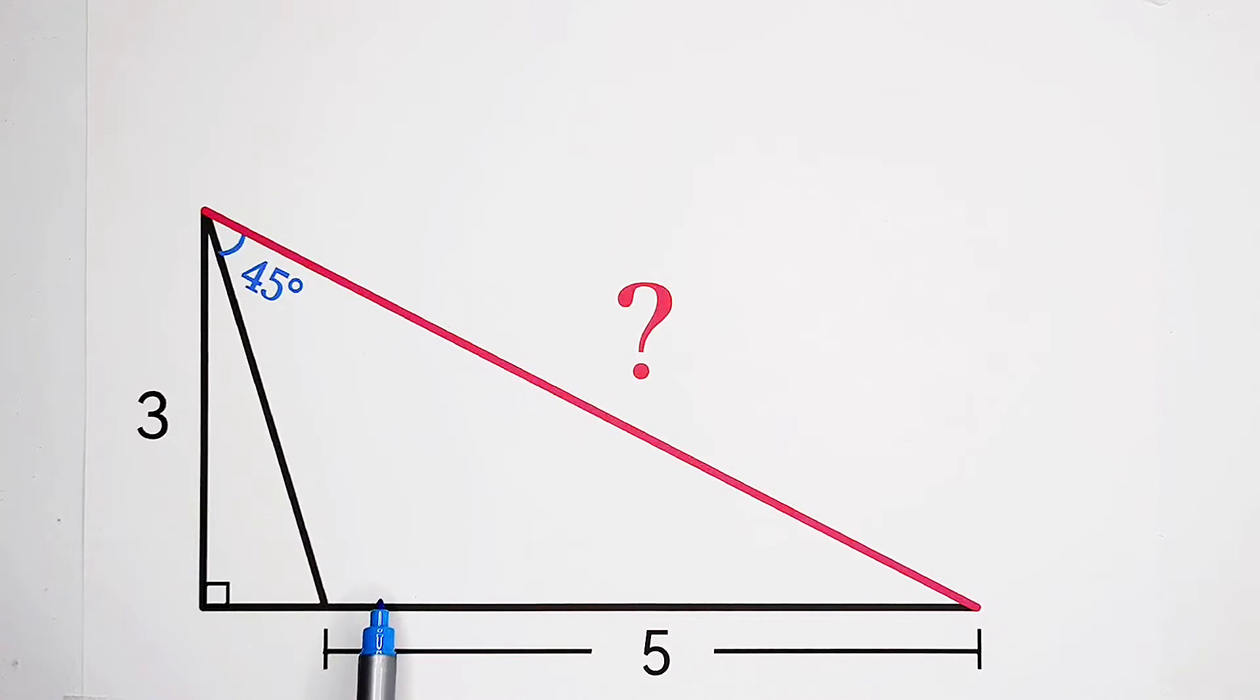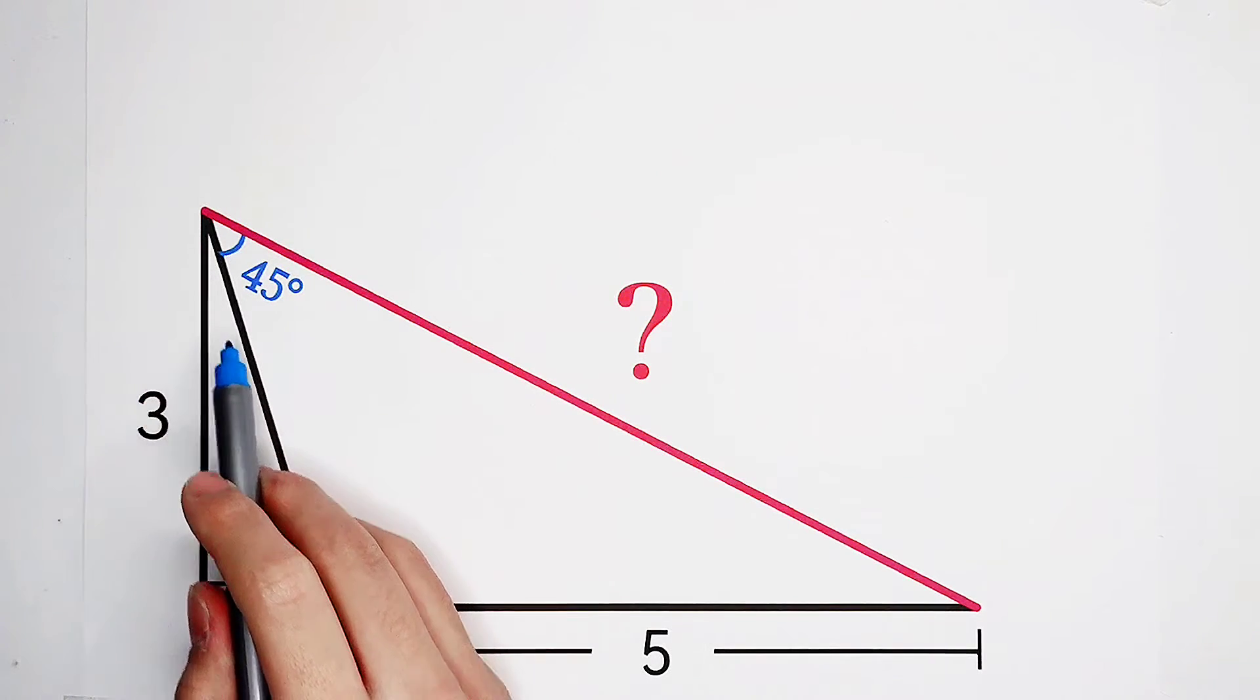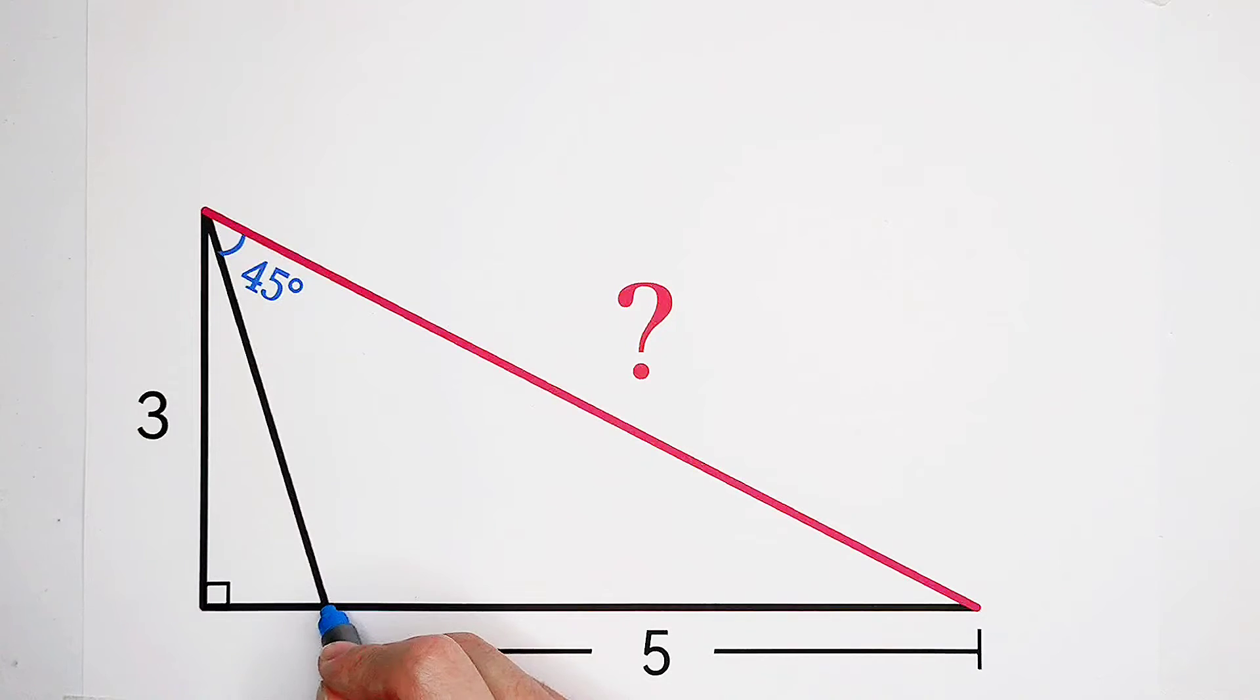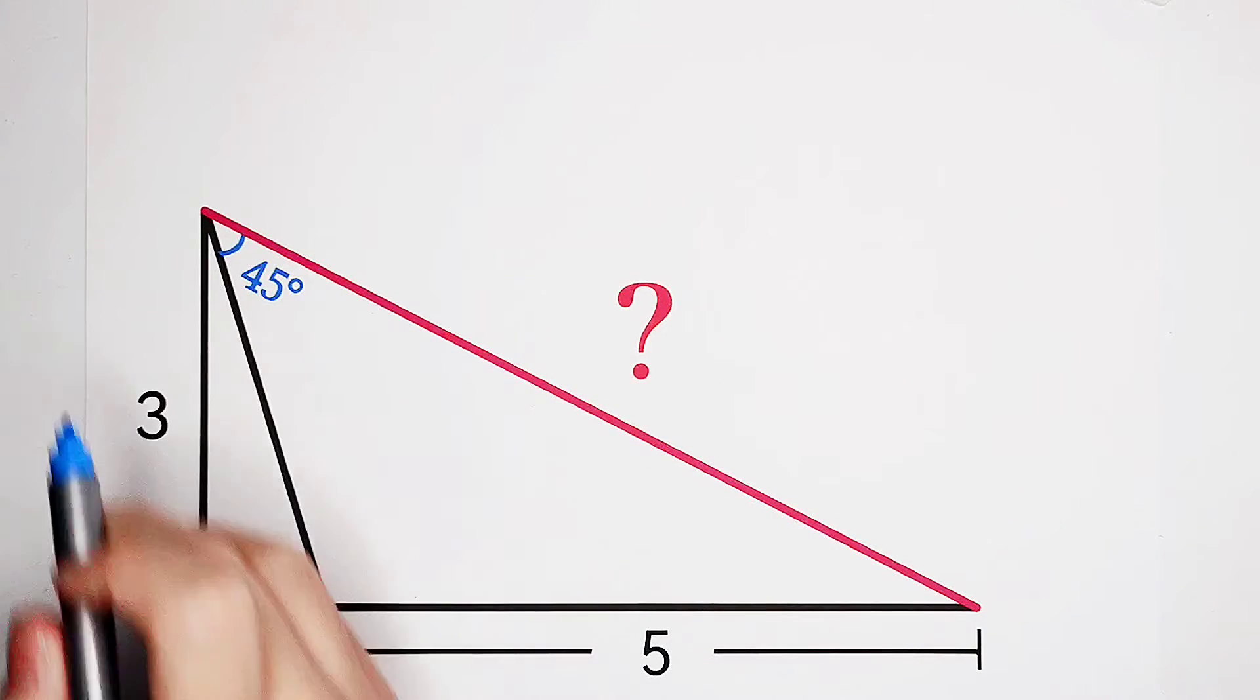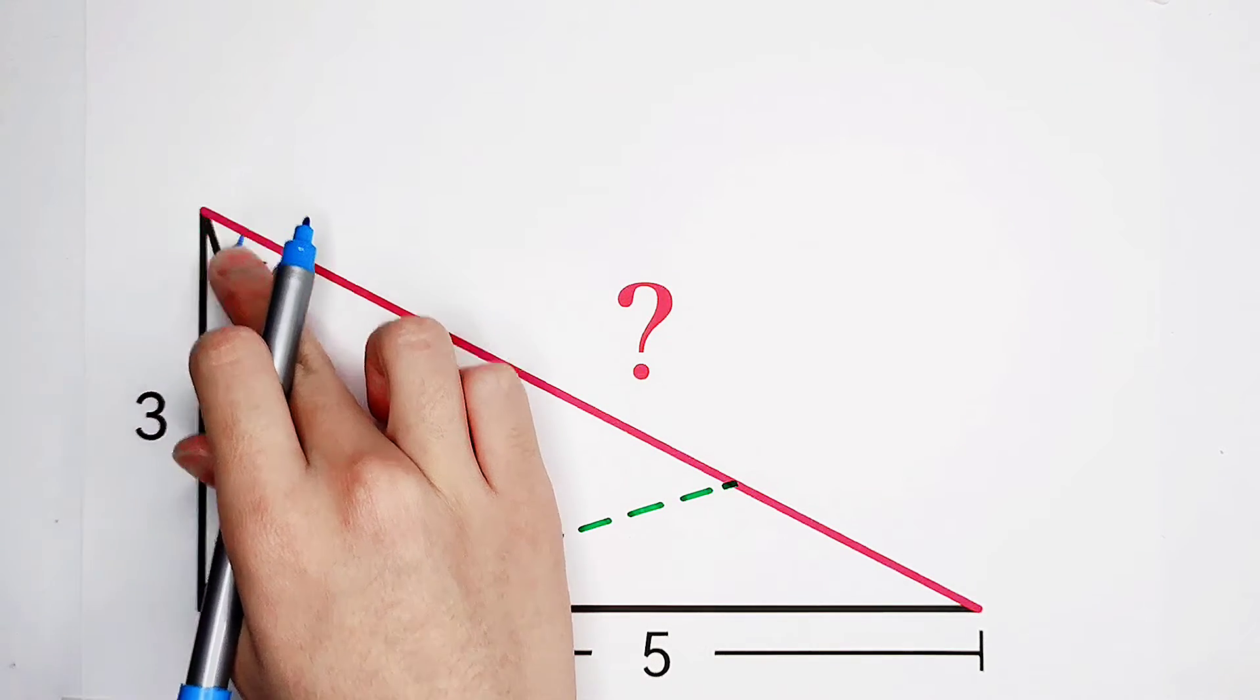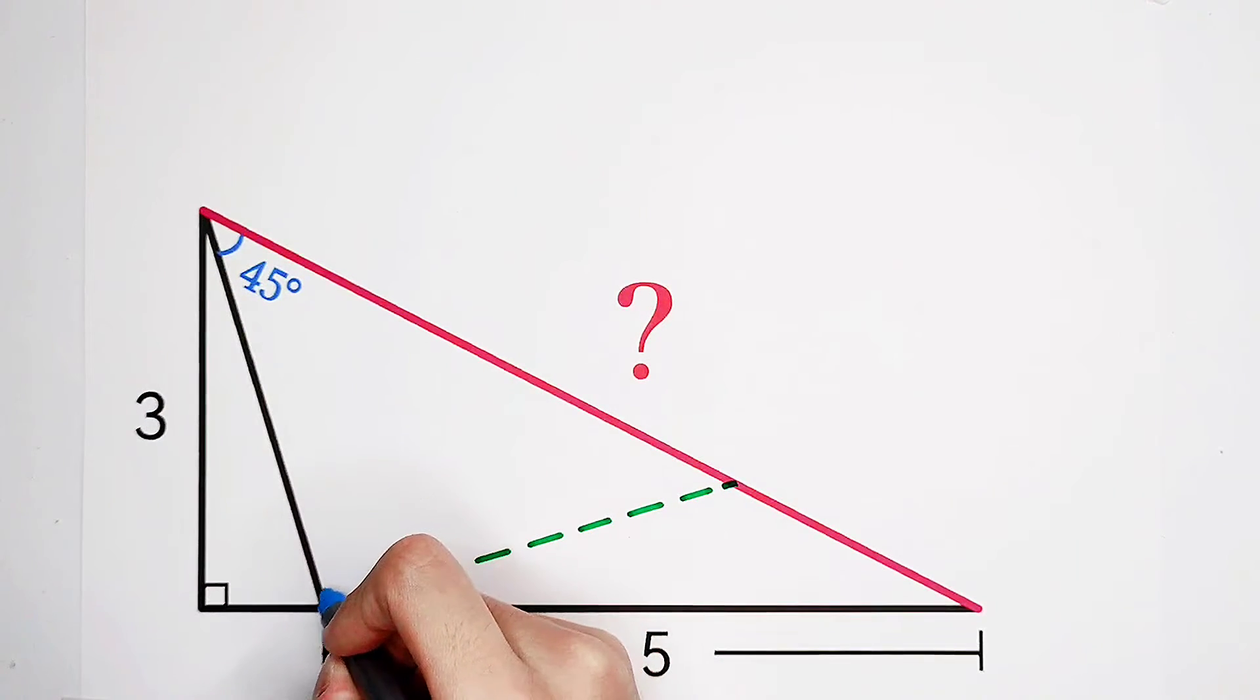But how? Not hard. Now, we can construct the perpendicular to this line segment from this point. And the perpendicular will intersect the hypotenuse. This green line is the perpendicular to this line segment. Of course, here is 90 degrees, a right angle.